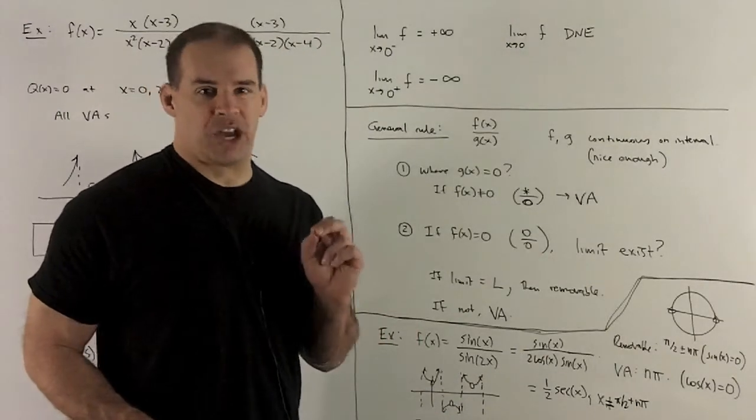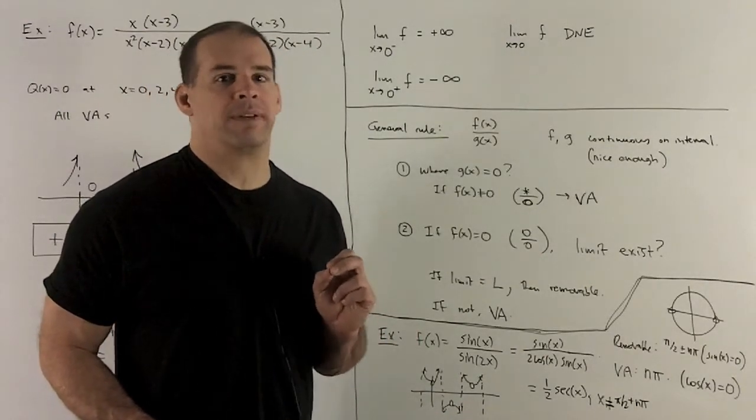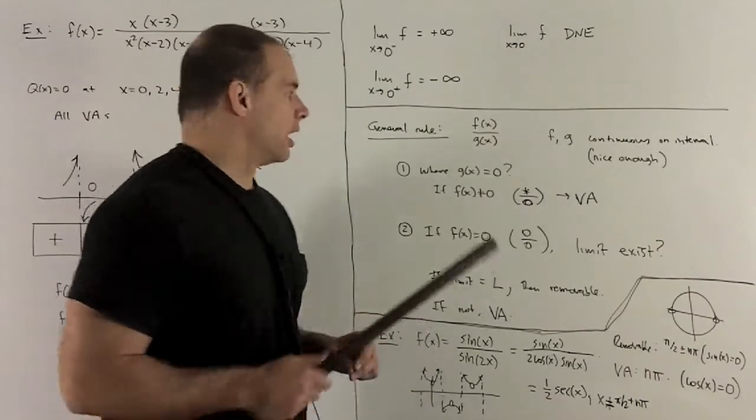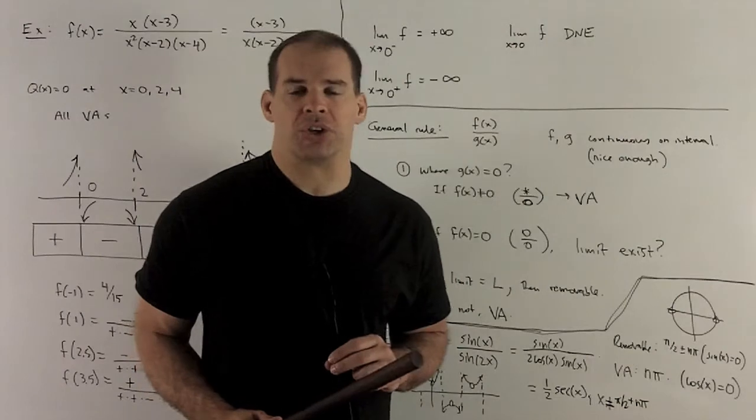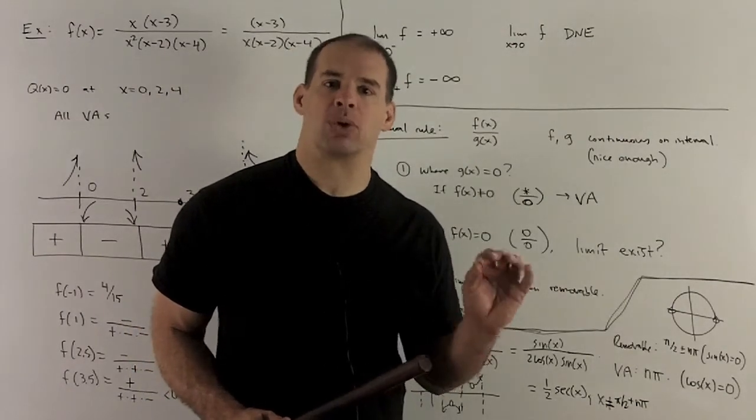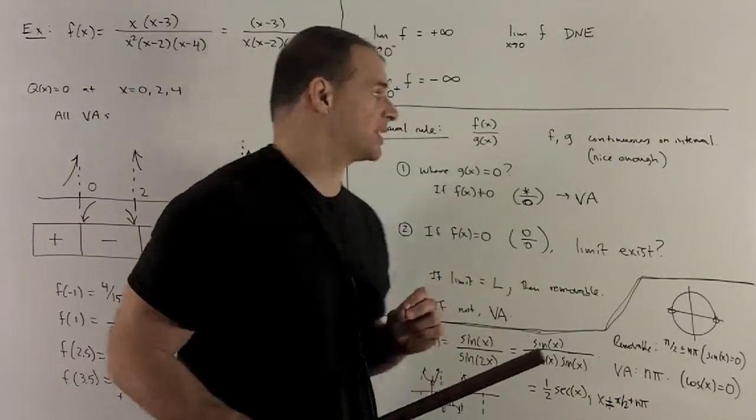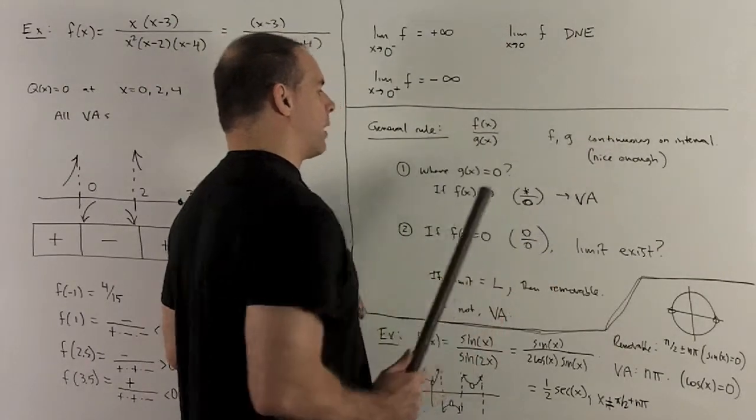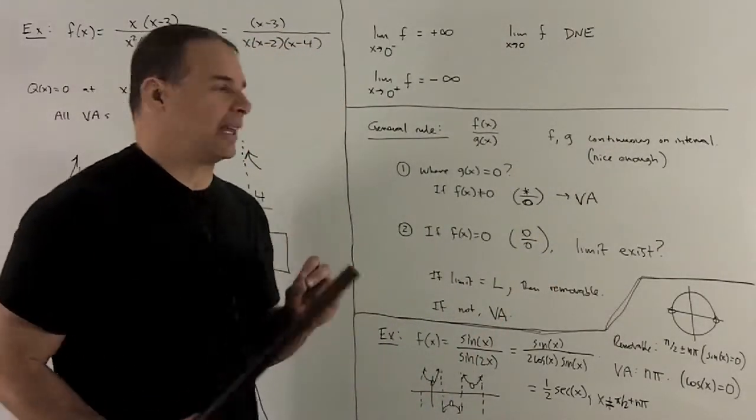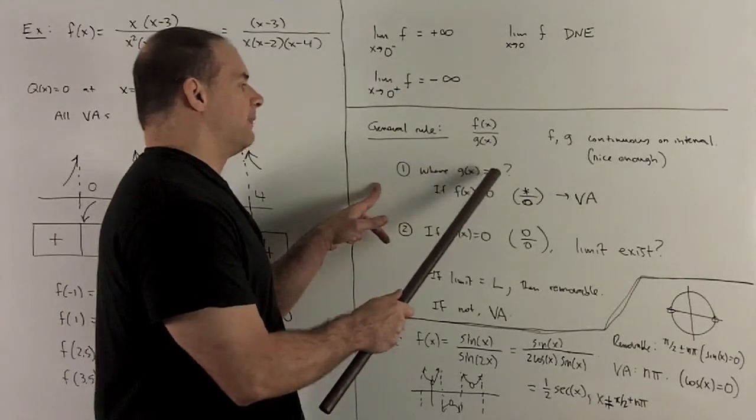How about in general? Suppose you're not looking at rational functions. What if I just have a continuous function over another continuous function? It's going to depend on the functions that you're looking at, but here's some general rules of thumb when your functions are very nice. So, let's say f and g are continuous on an interval. It's going to be the same idea. We're going to take a look at where the bottom function is equal to 0.